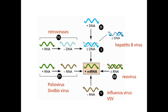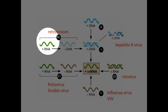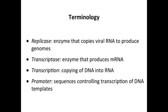The viruses we will talk about today are shown in the context of the Baltimore scheme. We're going to talk about plus-stranded RNA viruses, negative-stranded RNA viruses, and double-stranded RNA — these three. We're not going to talk about retroviruses today; even though they have RNA, they get a lecture to themselves because they're pretty neat.